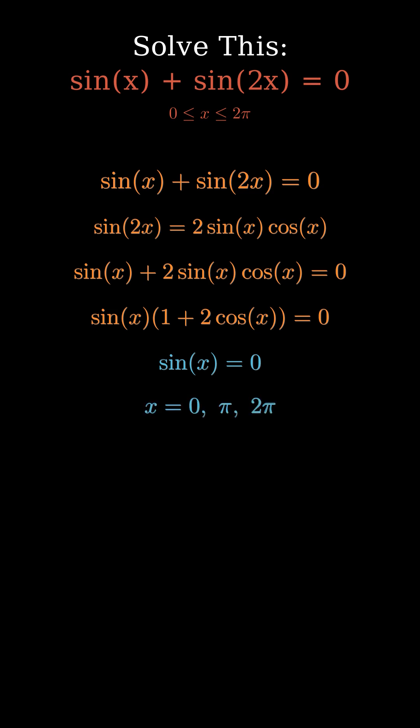Sine x equals 0 at angles where the graph of sine crosses the x-axis. That happens at x equals 0, π, and 2π within one full cycle.